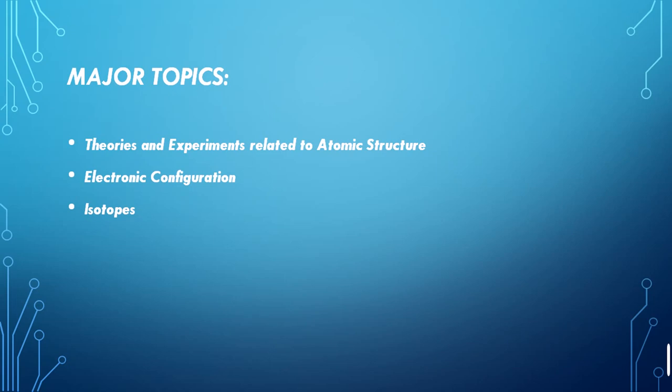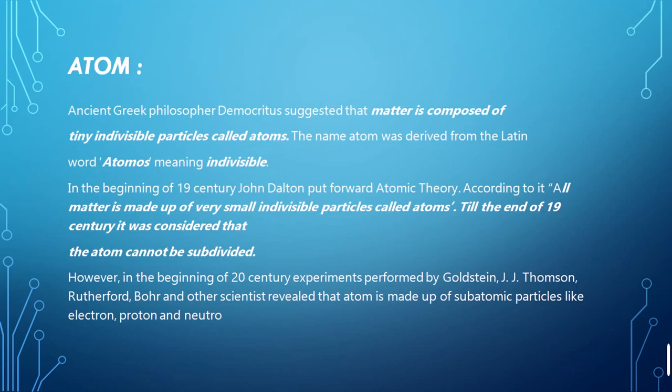There were some major theories and experiments performed about how atoms were in the previous state and now in what state — the electronic configuration, as well as the isotopic electronic configurations of these atoms. Today our topic is about the atom and the structure of the atom. The ancient Greek philosopher Democritus suggested that matter is composed of tiny invisible particles.